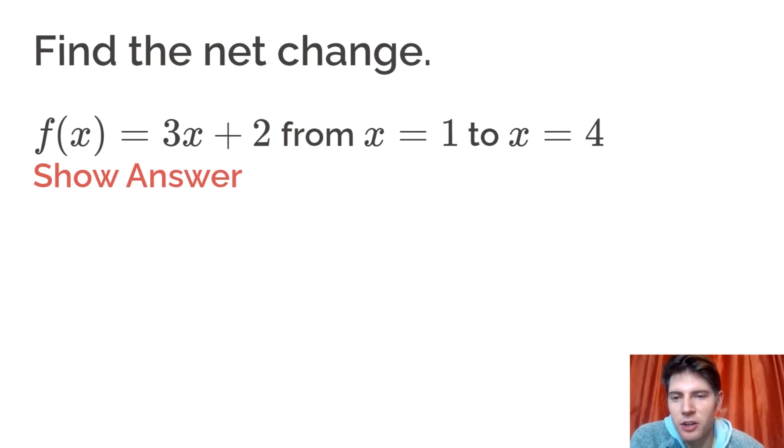So to do net change, all it is is the function value of your larger number of x minus the function value for your smaller number of x. And that's it.